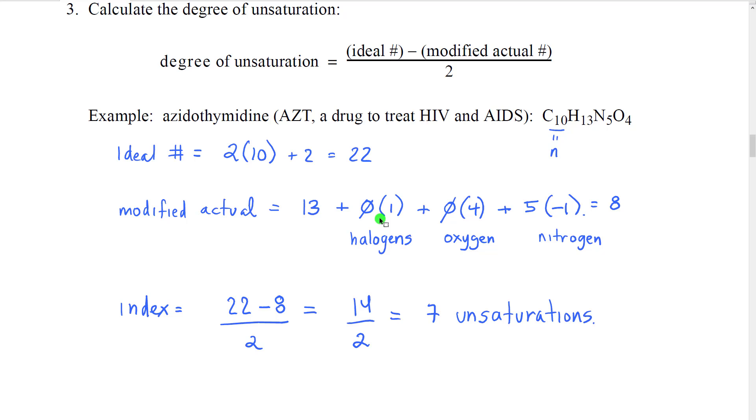We're going to not do anything for the oxygen. So even though we have four oxygens, we're just going to ignore them, zero times four. And then we're going to subtract one for each nitrogen. So we have five nitrogens times negative one, and then we sum these together. And so when you take 13 minus 5, you get 8. This is our modified actual number of hydrogens.